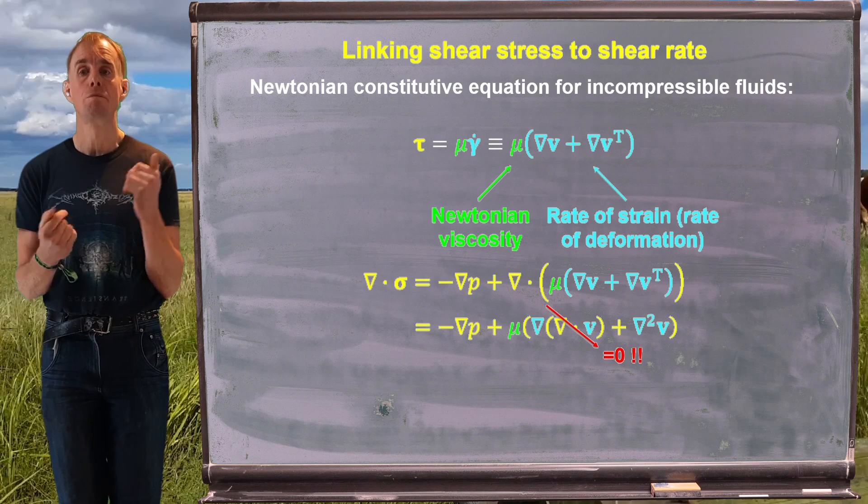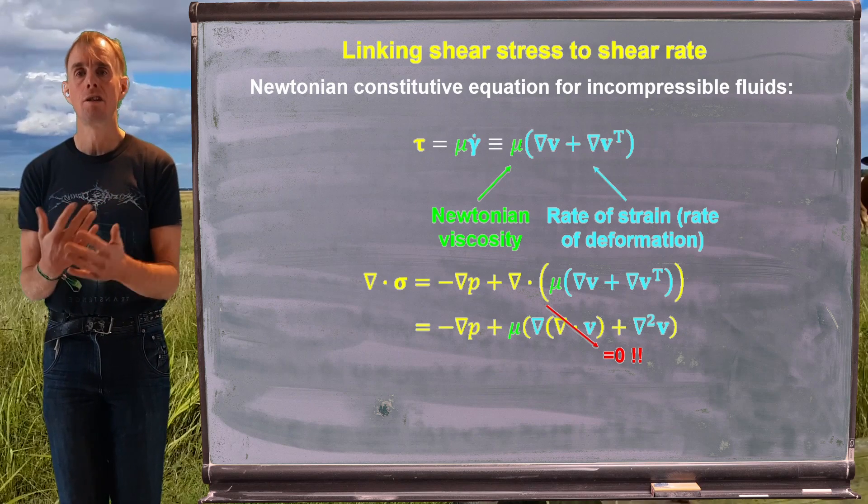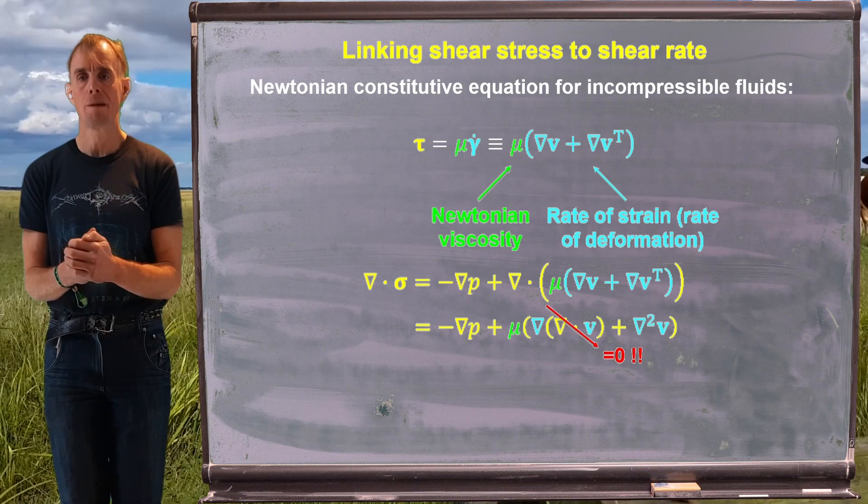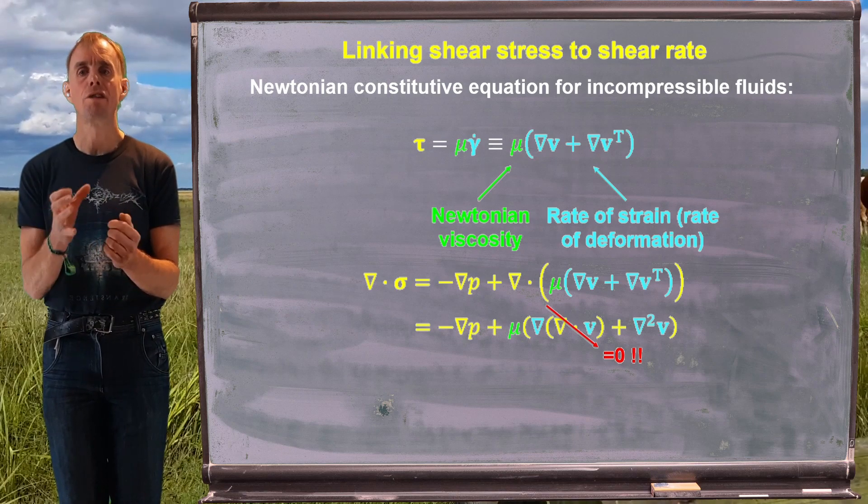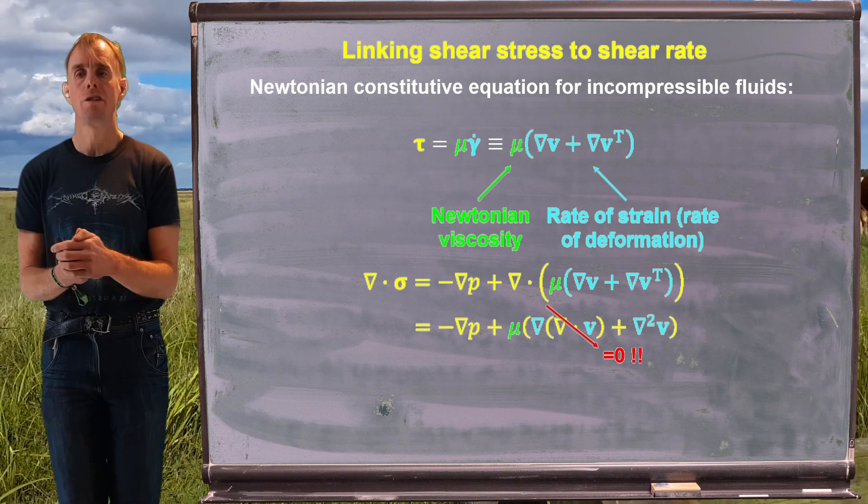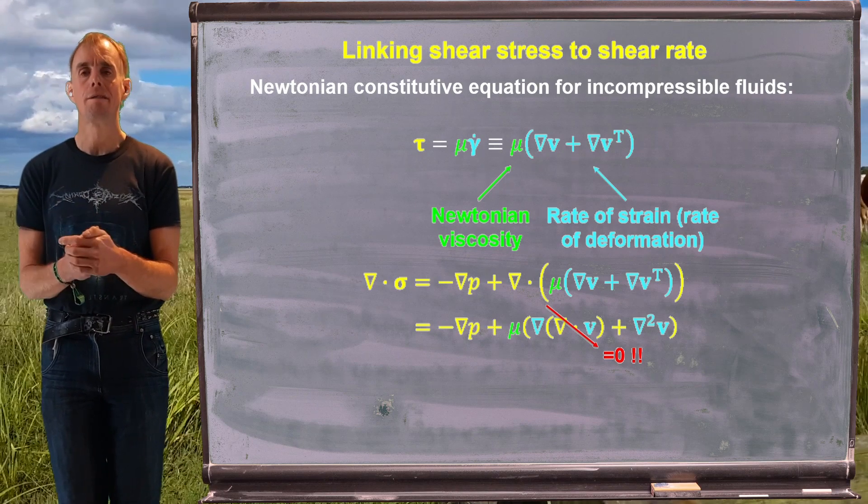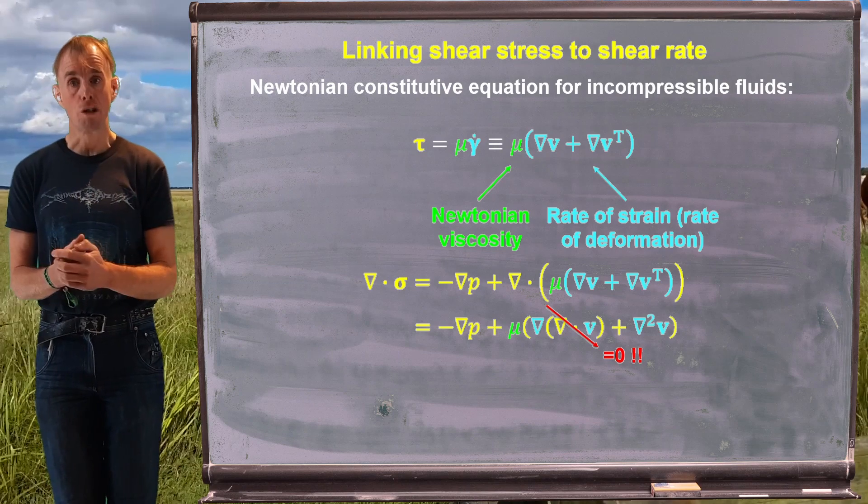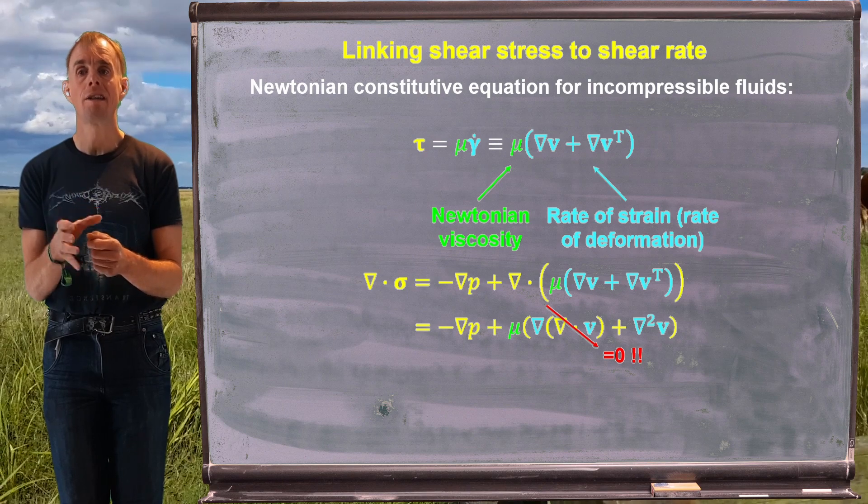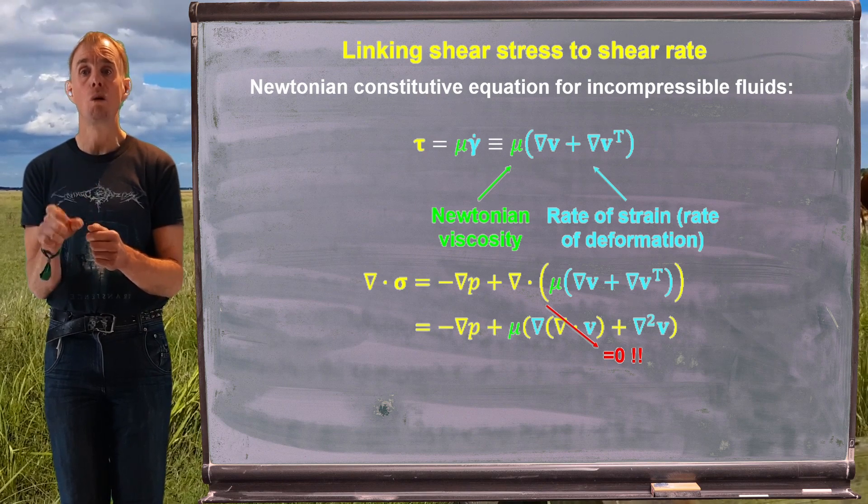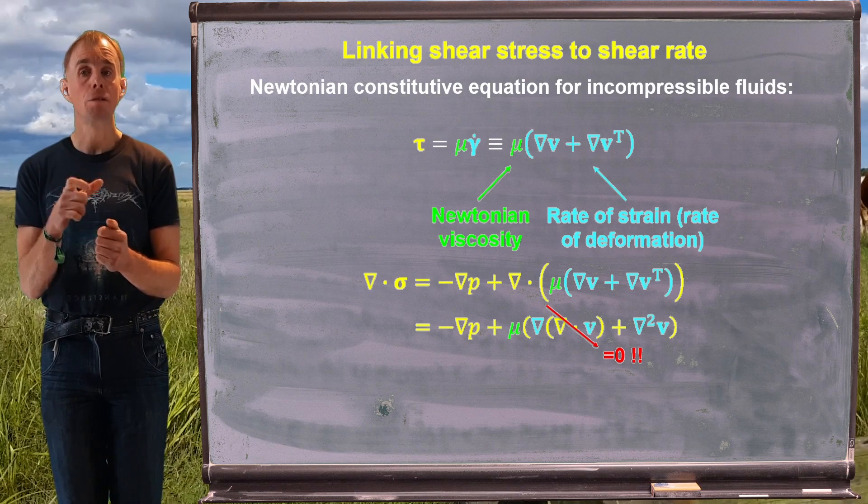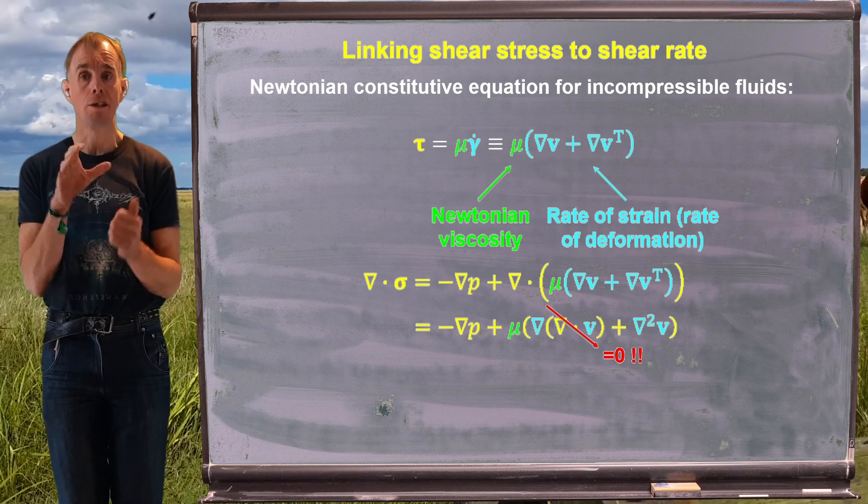This is why we're looking at incompressibility, because it's a really nice, simple case that is widely applicable to just about everything that we're going to examine. If we look at del dot grad v transpose, we simply end up with the Laplacian of the velocity field, del squared v. And if you're unsure of this, go and prove this in Cartesian coordinate space by writing down the inner product of grad v with the gradient operator, and the inner product of the gradient operator with grad v transpose. And you'll see that this is true.